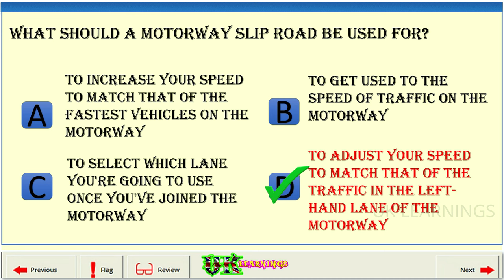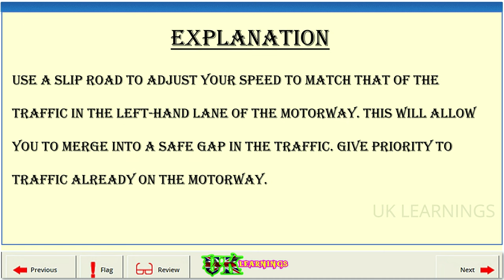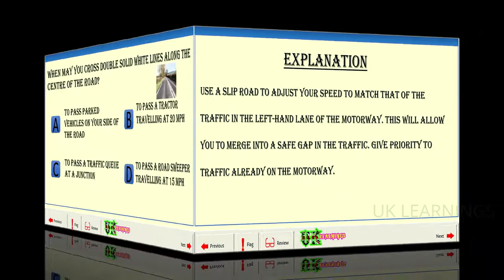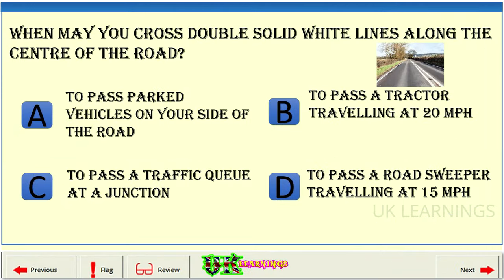Explanation: Use a slip road to adjust your speed to match that of the traffic in the left-hand lane of the motorway. This will allow you to merge into a safe gap in the traffic. Give priority to traffic already on the motorway.